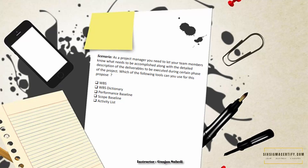The correct answer is WBS dictionary, as it contains the detailed description of work packages including schedule milestones, what is being delivered, how to know if the deliverable is accepted, resources, and expected cost. WBS alone is incorrect because it does not describe work packages in detail. Scope baseline or performance measurement baseline could also be correct since both contain the WBS dictionary. Activity list is incorrect as it only lists activities without detailed deliverable information.